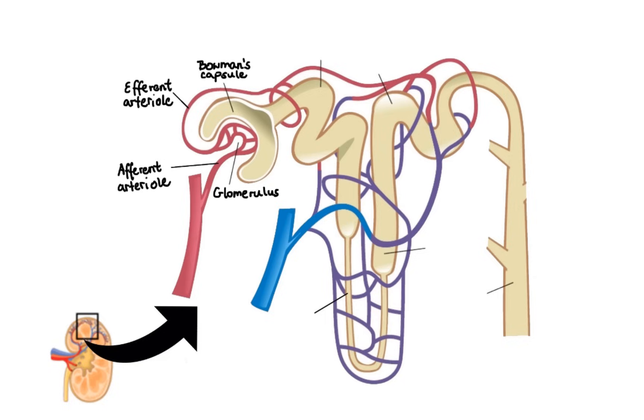Next, glomerular filtrate which contains mostly water, amino acids, glucose, sodium bicarbonate, and electrolytes flows through proximal convoluted tubule. In this region, almost 100% of the amino acids, glucose, and about 90% of bicarbonate get reabsorbed, as well as about 65% of electrolytes such as sodium and potassium, along with water. As a side note here, remember, wherever sodium ions go, chloride and water tends to follow.